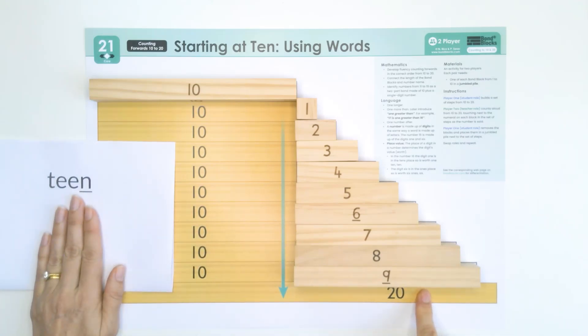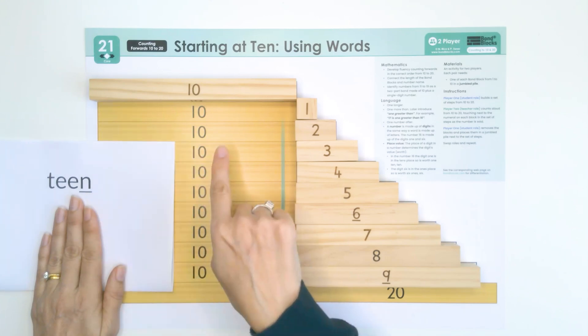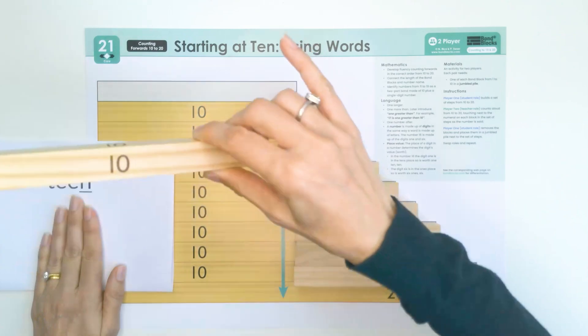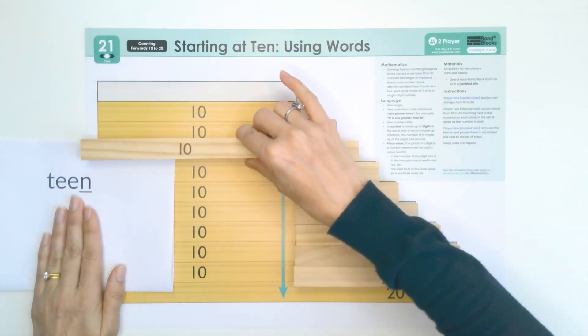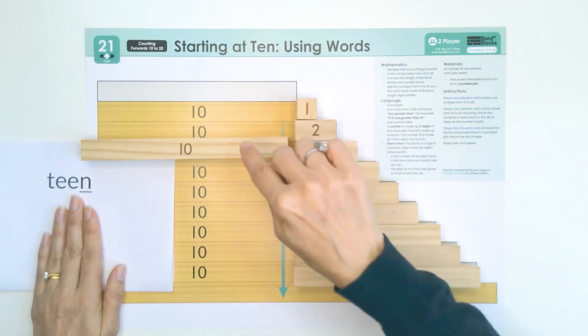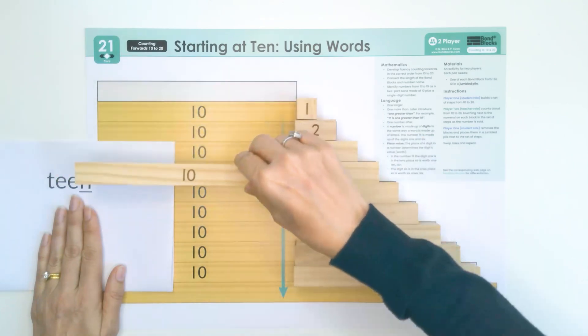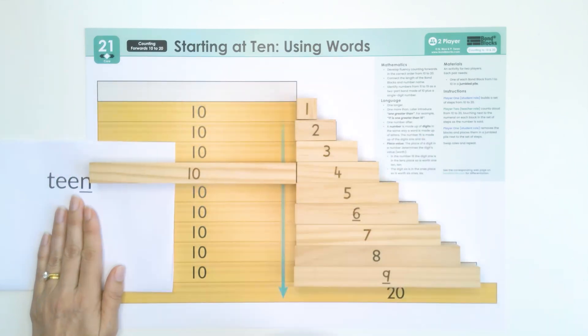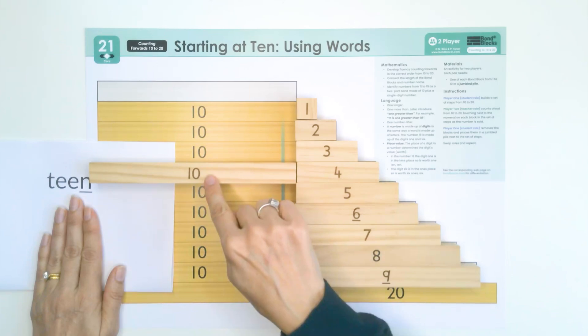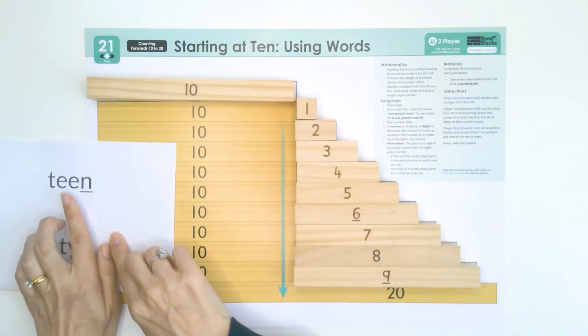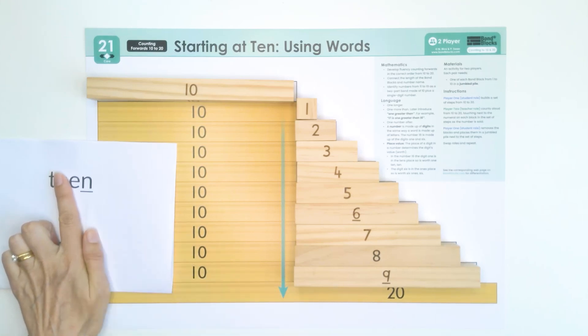And then 20. The word teen means to add one 10. So we say 13 and it means 3 add 10. We say 14 and it means 4 add 10. Teen means to add one 10. It even looks a little bit like the word 10.